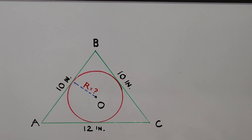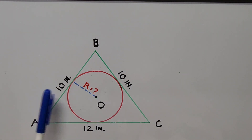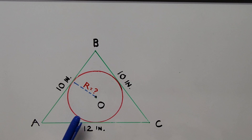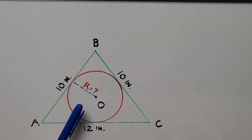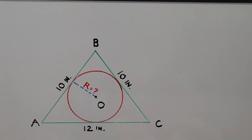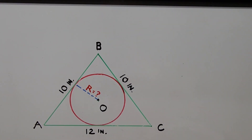Hello everyone, we have here a nice geometry problem. We have a circumscribing triangle ABC with all the sides given and an inscribed circle at center point O, and we're going to calculate the radius of the inscribed circle.